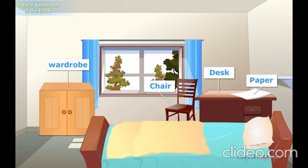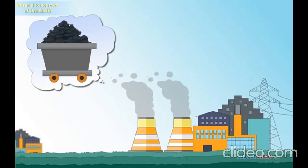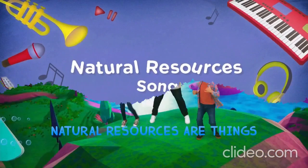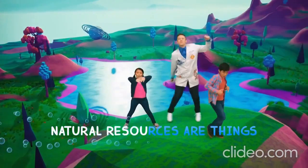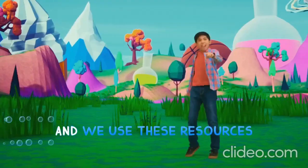We use rocks and minerals to make metals, pottery, and glass. Coal is a source of energy which powers and heats our homes. Natural resources are things we use from nature.